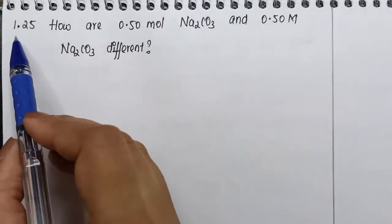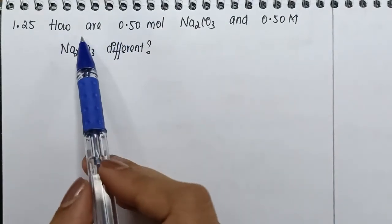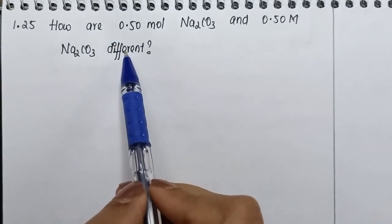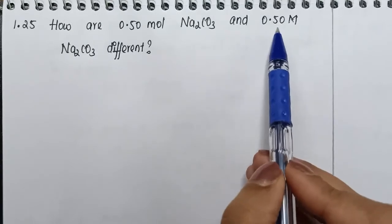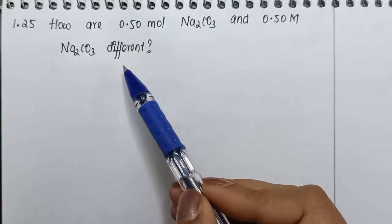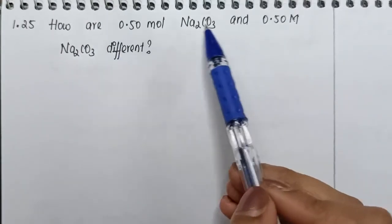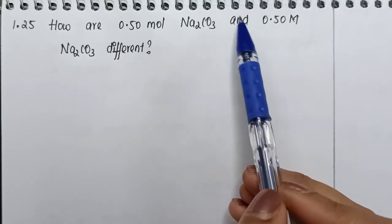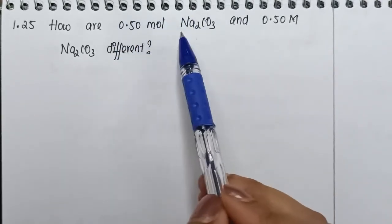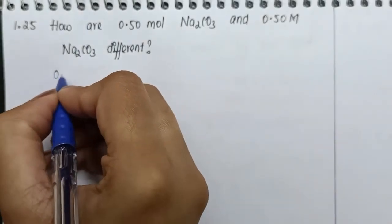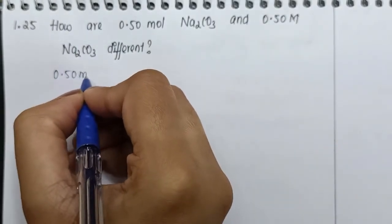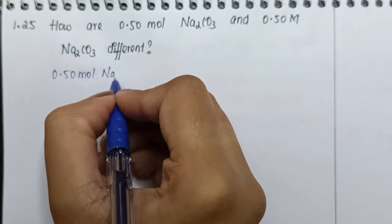Students, your next question is 1.25. They're asking to show the difference between 0.5 mole Na2CO3 and 0.5 molar Na2CO3. We need to show the difference between both, so first we'll talk about 0.5 mole Na2CO3. What do you mean by that? When I'm talking about 0.5 mole Na2CO3...